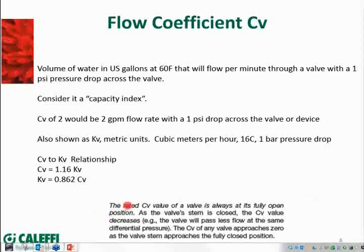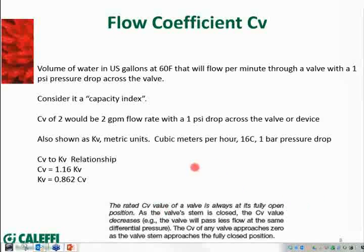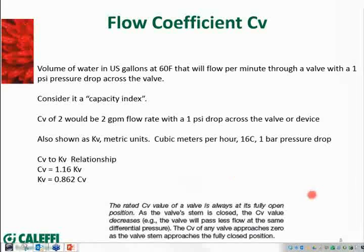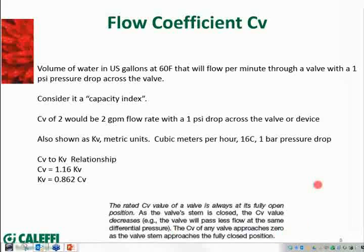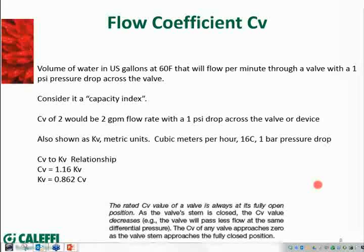When we start talking about the CV value — let's say a ball valve, for instance — this value would be in the full open position. So if you had a ball valve with a CV of 11 or perhaps 13, that indicates when the valve is fully open. Now as you start closing or choking down that valve, you get to the point when you close it off completely and the CV goes to zero. There are some valves where you can adjust and change that CV.